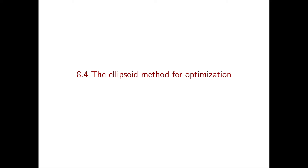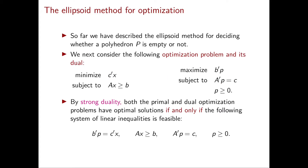In this video, we see how the ellipsoid method can be used to solve linear programming optimization problems in polynomial time. So far, we have only seen how the ellipsoid method can be used to solve in polynomial time a linear programming feasibility problem. So the first question we should ask ourselves is: can we solve an optimization problem by solving a feasibility problem? And the answer is yes.